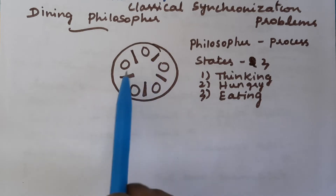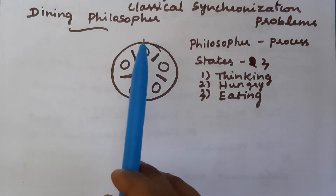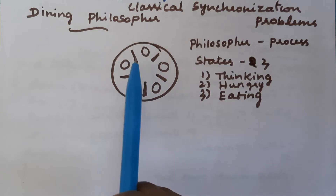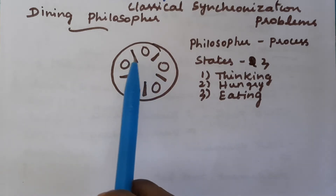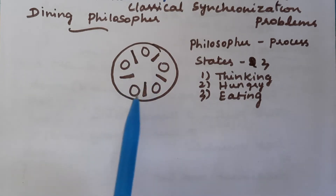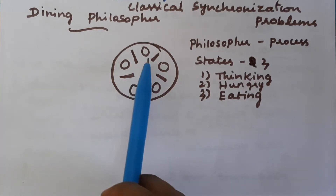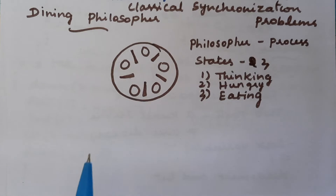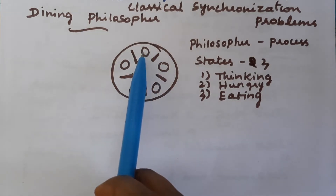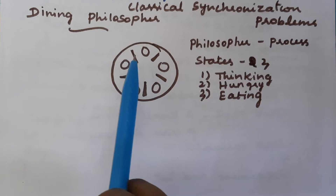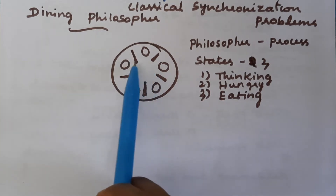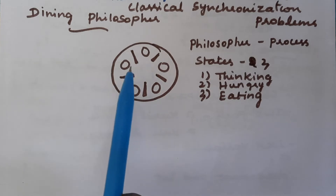The food is available for each philosopher separately. In the round table, we don't have two forks separately for each plate of food. Instead, between two plates we have one fork. So this is the arrangement of food and forks. If any philosopher feels hungry, he can eat with the help of the fork available on his left and also his right side — he has to use two forks.